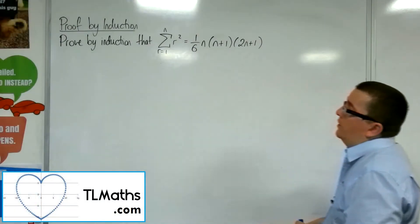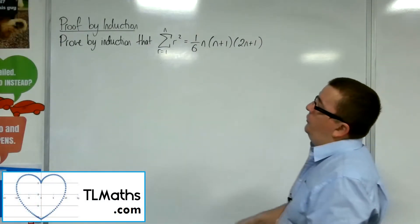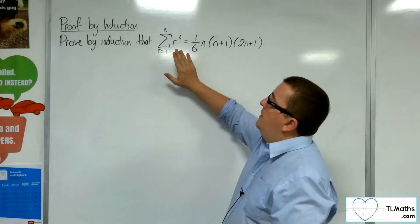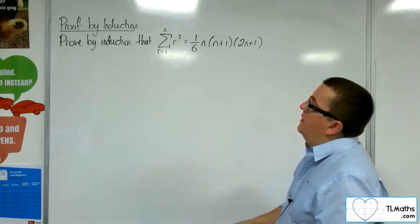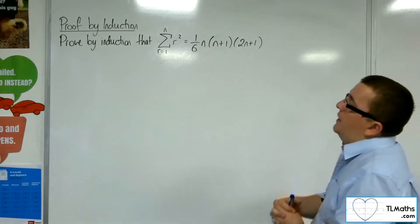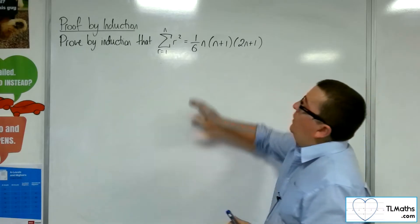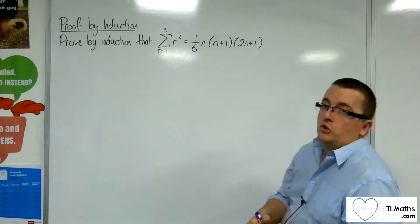Okay, so in this video, we are going to prove by induction that the sum of the natural numbers from 1 to n, the squares of the natural numbers from 1 to n, is equal to 1/6 n times n plus 1 times 2n plus 1.